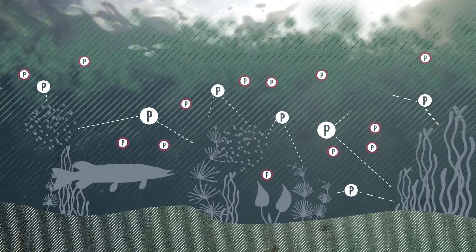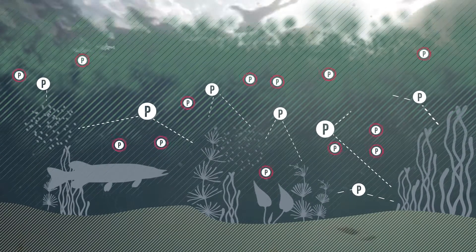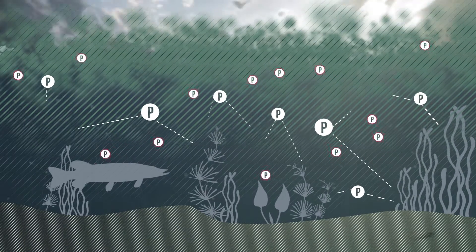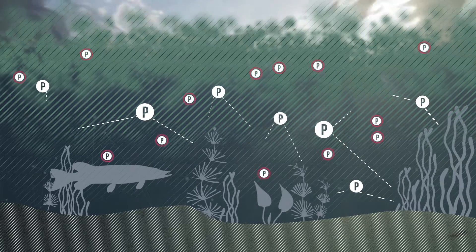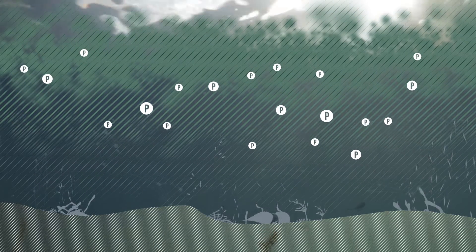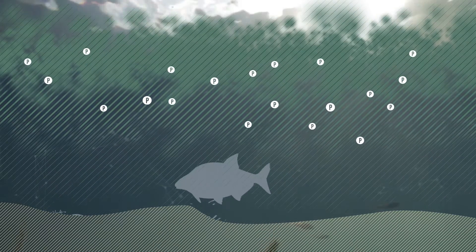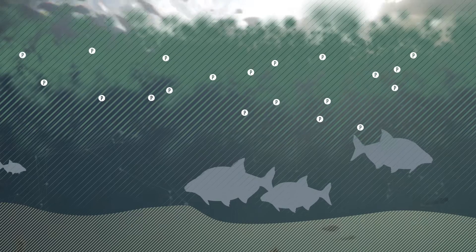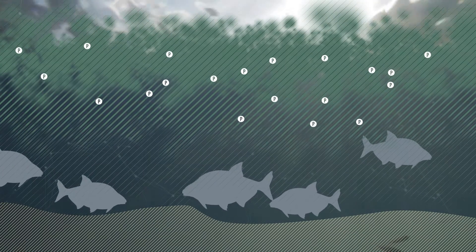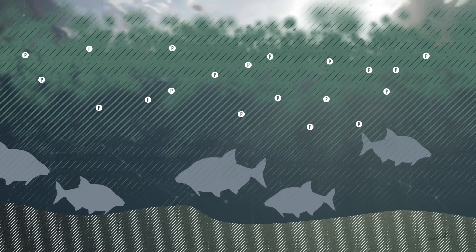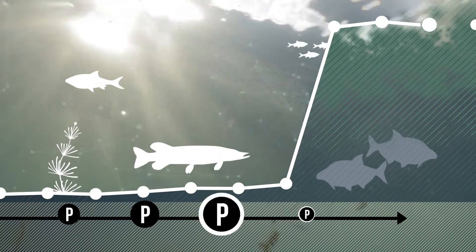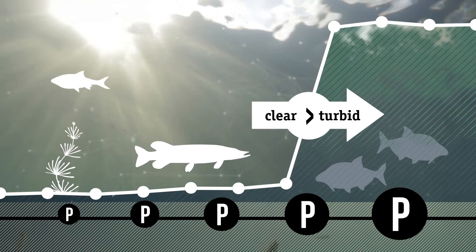Algae benefit from this and their population grows rapidly. They block the sunlight and the plants vanish. The diversity of fish species decreases. The algae dominate. The system has shifted from a clear into a turbid state.